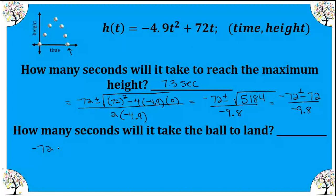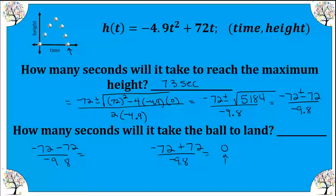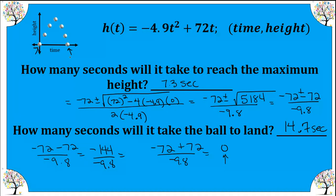We have two cases: negative 72 minus 72 over negative 9.8, and negative 72 plus 72 over negative 9.8. The second case gives us zero over negative 9.8, which equals zero — that's the initial root where the ball started. The first case gives us negative 144 over negative 9.8, which is approximately 14.7 seconds. So it takes about 14.7 seconds for the ball to land, and that is our second zero.